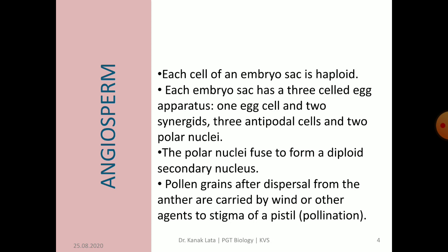The female gametophyte, that is the embryo sac, is present within the ovule. It is highly reduced and consists of a single egg cell, two synergids, three antipodals and two polar nuclei. Each cell of an embryo sac is haploid. The two polar nuclei fuse to form the secondary nucleus. The process of pollination results in transfer of pollen grains from anther to stigma of the pistil. In angiosperms, there are different modes of pollination like pollination by wind, by water, by insects, by birds, by bats, and even human beings also help in pollination.